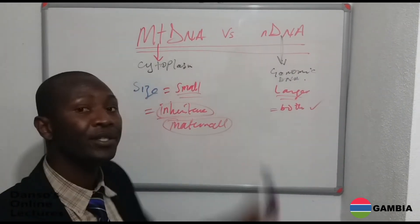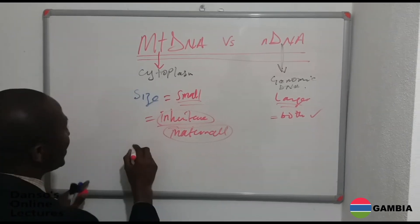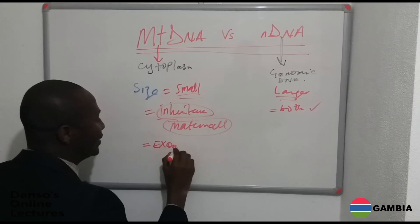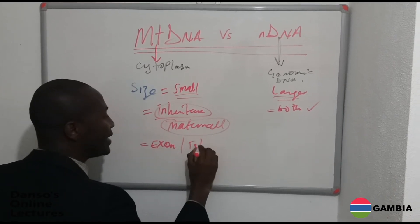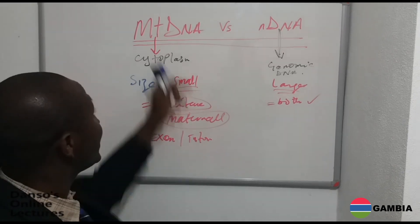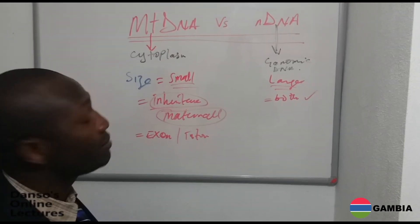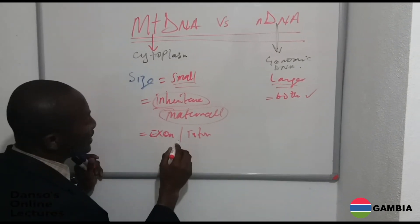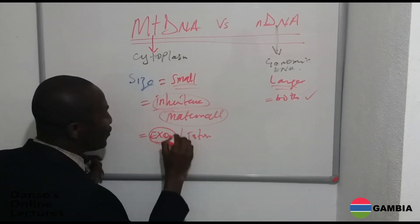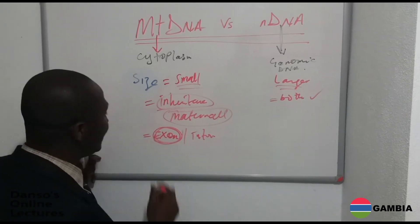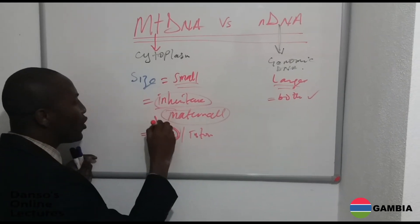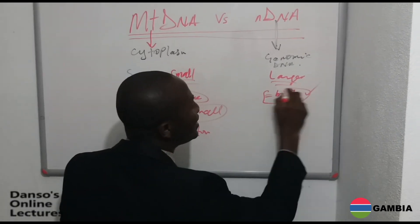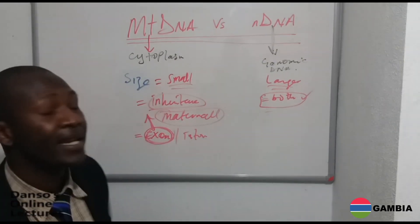There is big recombination in nuclear DNA. Another difference between these two is the content of introns and exons. Mitochondria DNA is 95 to 99 percent exons according to some papers, meaning they are all coded for a particular protein. But for nuclear DNA, only a few coding regions are seen.